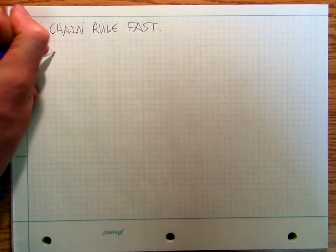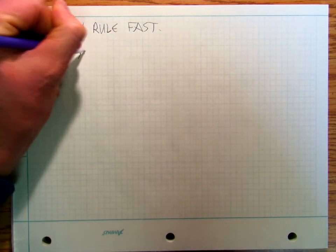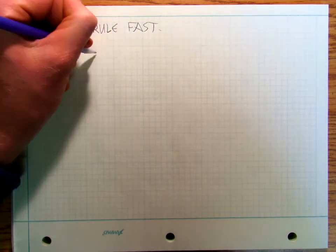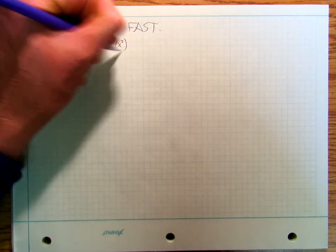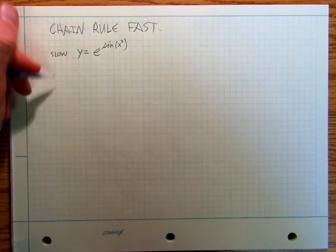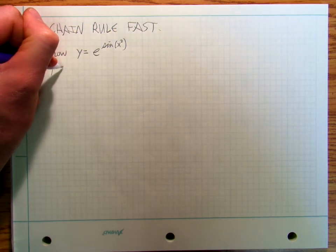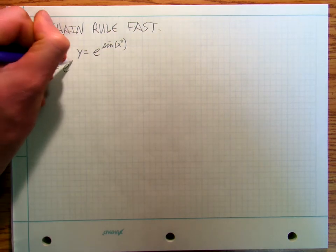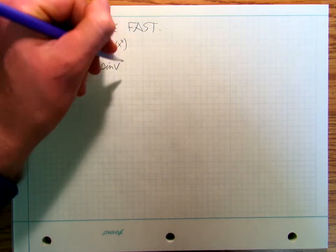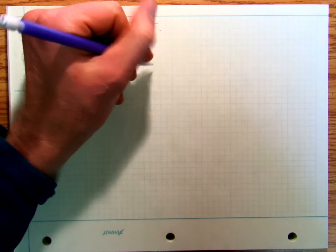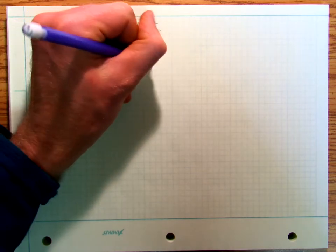So slow, y equals e to the sine x squared. Okay, I say y equals e to the u, u equals sine v, v equals x squared.